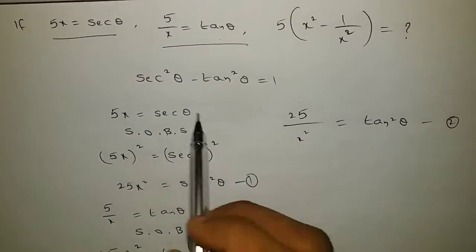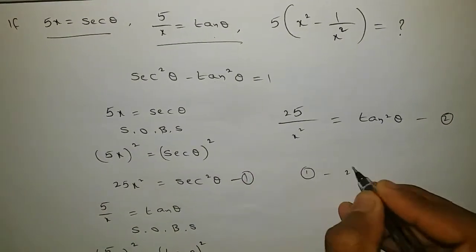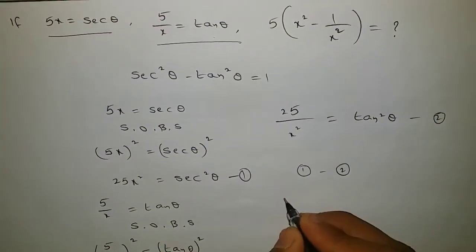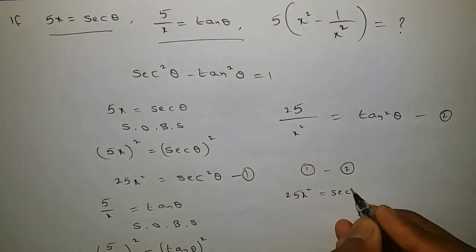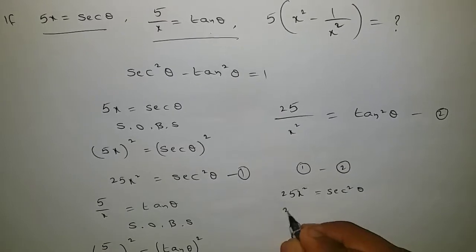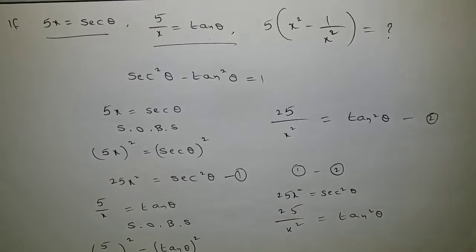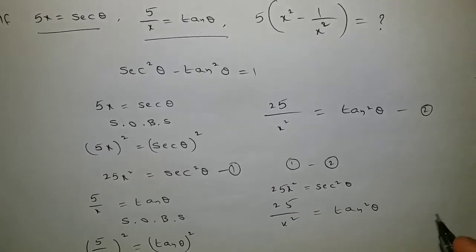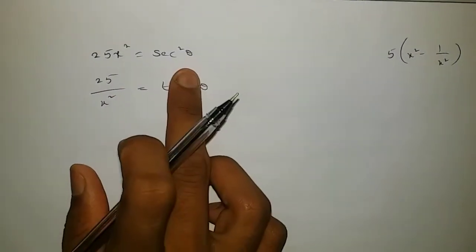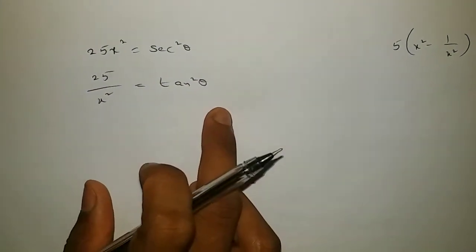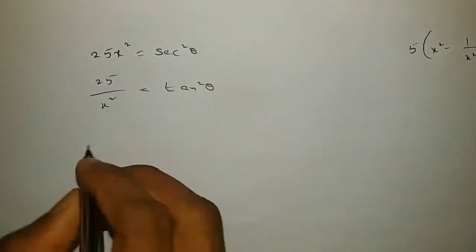Now this is the first equation and this is the second equation. According to our identity, secant squared theta minus tan squared theta equals 1, so we apply first equation minus second equation. The first equation is f squared times x squared equals secant squared theta, and the second equation is f squared by x squared equals tan squared theta. So we do subtraction of these two equations.